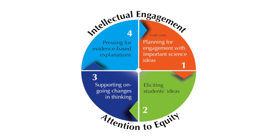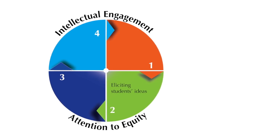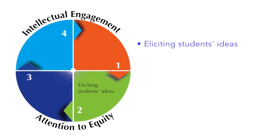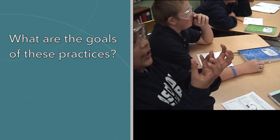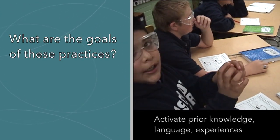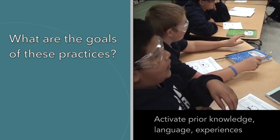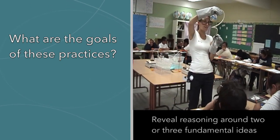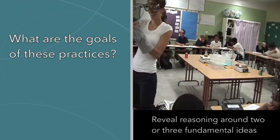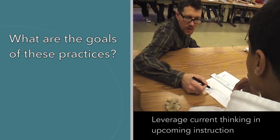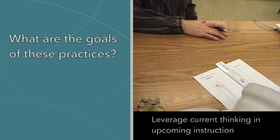The first teaching practice in this set has the same name as the set itself: eliciting students' ideas. The second practice is selecting which student ideas to make public for conversation. The third practice is adapting further instruction based on what you know about students' ideas and previous experiences. One goal is to activate prior experiences or language that might relate to the anchoring event. A second goal is to find out how students reason about just two or three fundamental aspects. A third goal is to make instructional decisions that will either take advantage of or challenge students' current thinking.